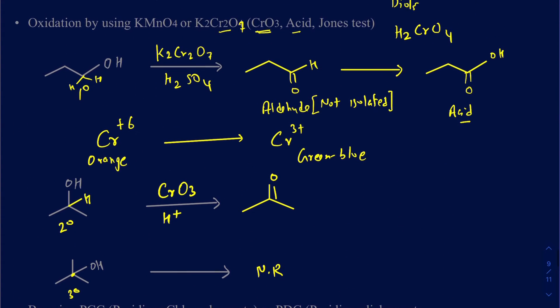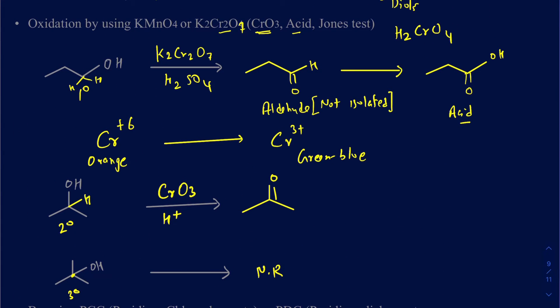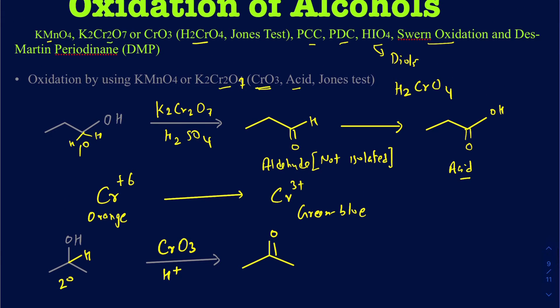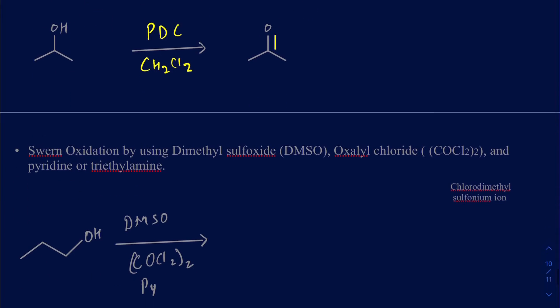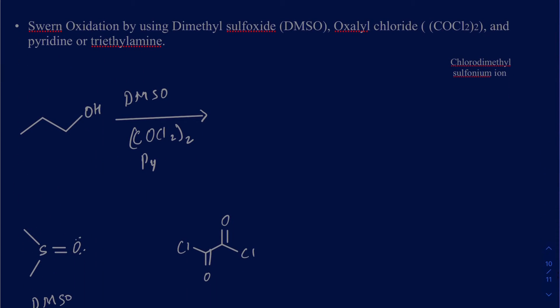Nowadays there are more common, safer, environmentally friendlier reagents. The manganate or dichromate use transition metals that are not good for the environment, so there are better ways of doing these oxidation reactions. One good example is the Swern oxidation — very common now. The Swern oxidation converts primary alcohols to an aldehyde, stopping the oxidation there, and also converts secondary alcohols to a ketone. Let's talk about its mechanism.